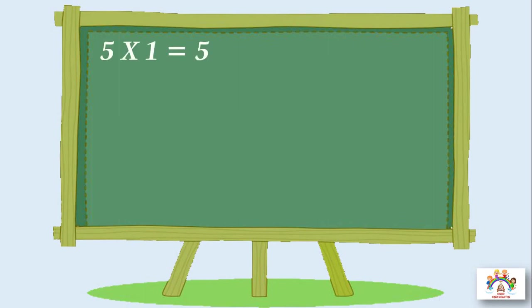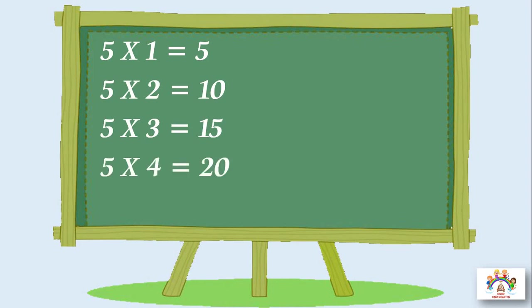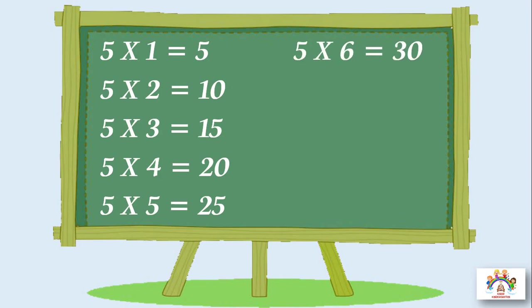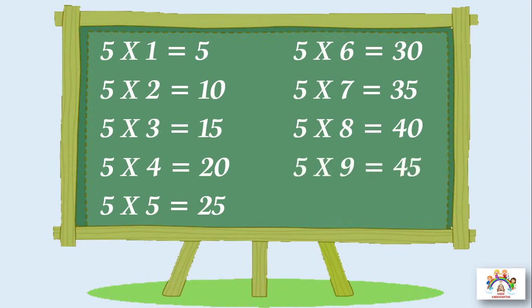Five ones are five. Five twos are ten. Five threes are fifteen, five threes are fifteen. Five fours are twenty, five fours are twenty. Five fives are twenty-five. Five sixes are thirty, five sixes are thirty. Five sevens are thirty-five, five sevens are thirty-five. Five eights are forty. Five nines are forty-five, five nines are forty-five. Five tens are fifty, five tens are fifty.